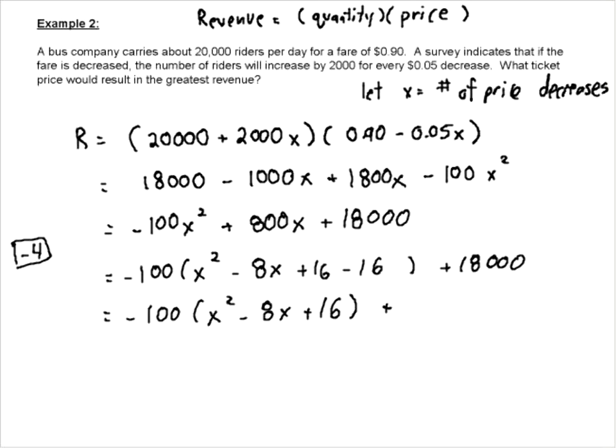And so we're going to get -100(x² - 8x + 16) plus, if we have 16 times 100, that's 1,600. So we're going to get 19,600. And when all is said and done, we're going to get -100(x - 4)² + 19,600.